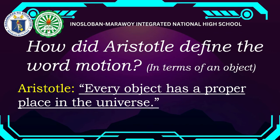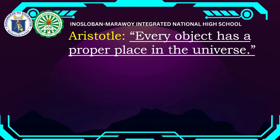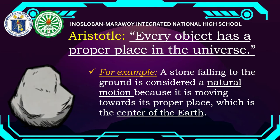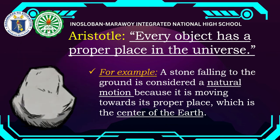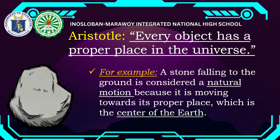For Aristotle, every object has a proper place in the universe — that is his key idea about motion. For example, if you throw a stone into the air, it will fall back down because the stone's proper place is the ground, towards the center of the earth. A stone falling to the ground is considered natural motion because it is moving towards its proper place.